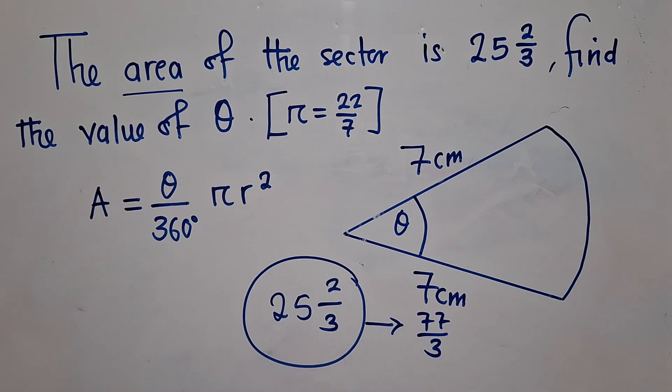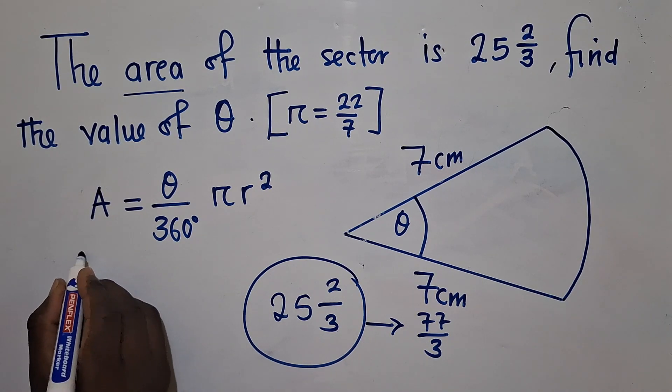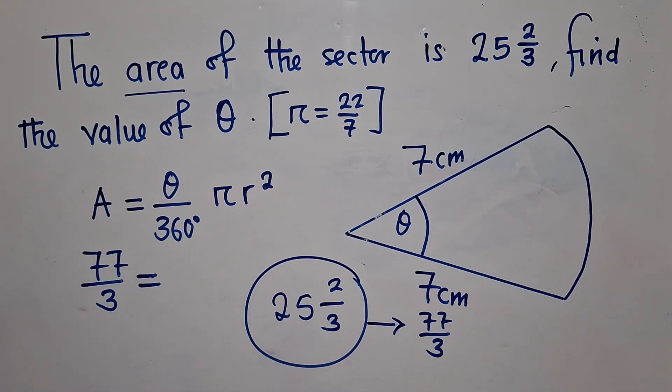You just multiply 3 by 25 and then plus 2, it will give us 77 over 3. So where area is, we're going to write 77/3, which is equal to...